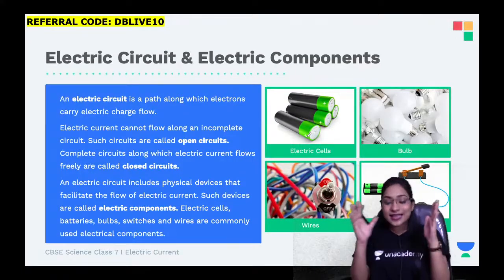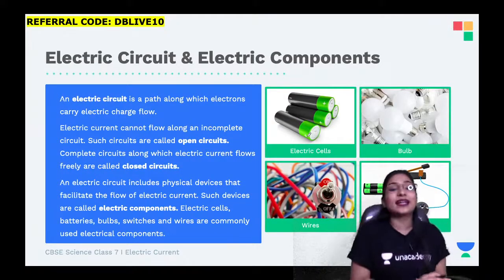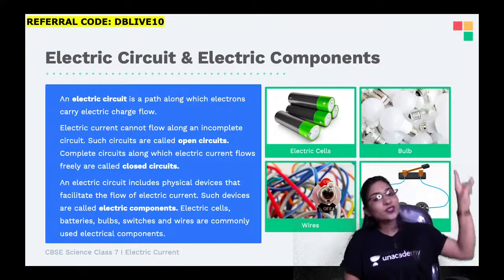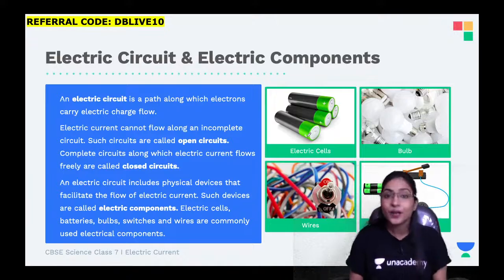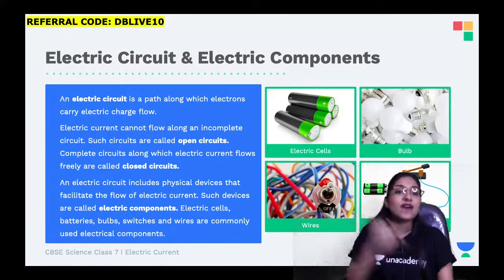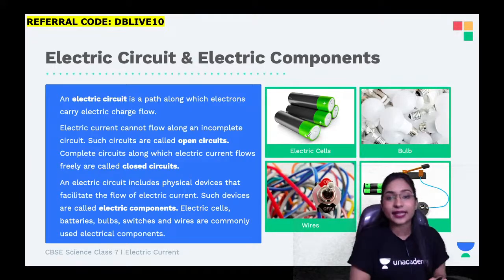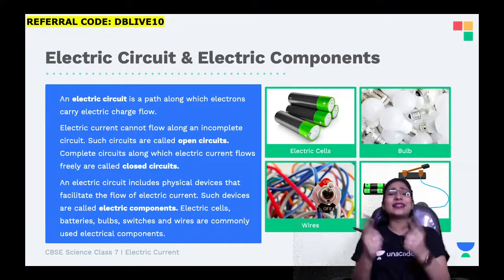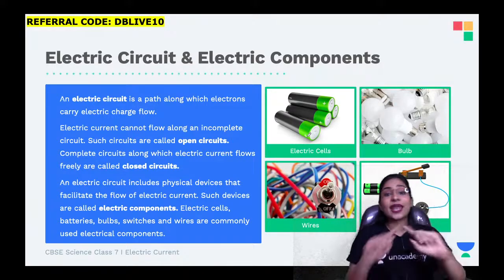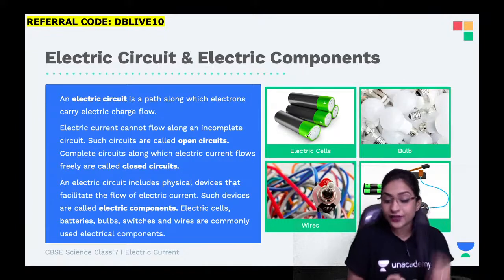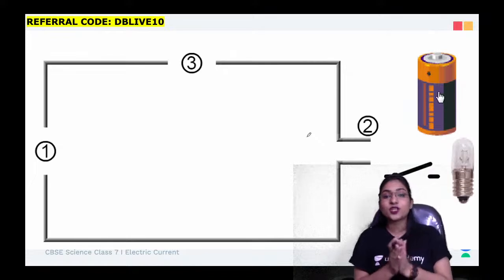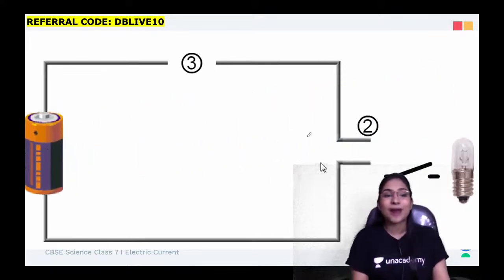What is an electric circuit? Whenever you want to use electricity, what do you do? You go and switch on the fan, switch on the light. These switches have to be there when you are using electricity. When you switch on - what is it that makes the light switch on? Actually, everything is connected to a circuit. Let me show you - here we are taking a battery.